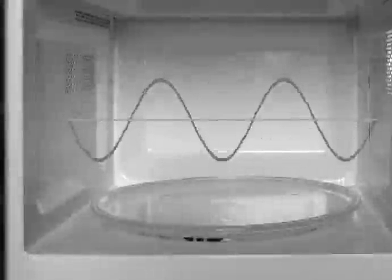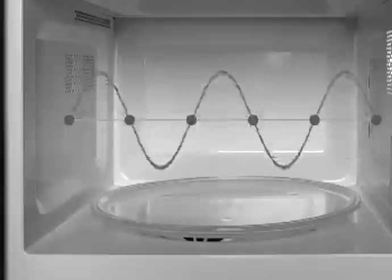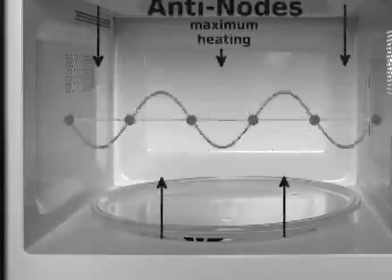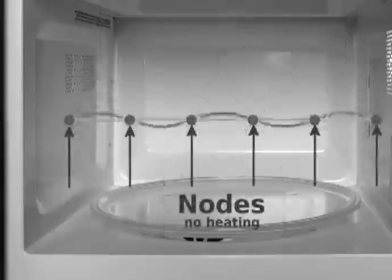The three-dimensional pattern of waves is difficult to predict, but the principle can be seen by looking at the waves in a single dimension. The peaks and valleys in the wave represent the greatest energy of the wave, while the nodes here correspond to the cold spots inside the chamber.